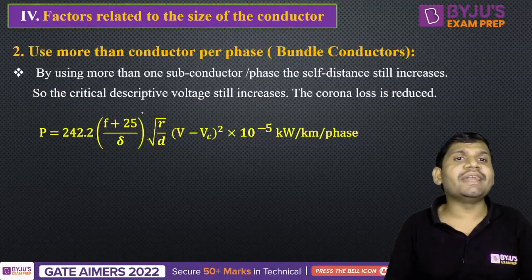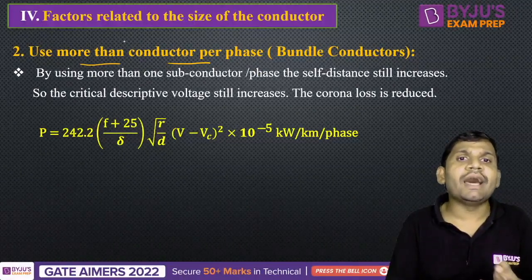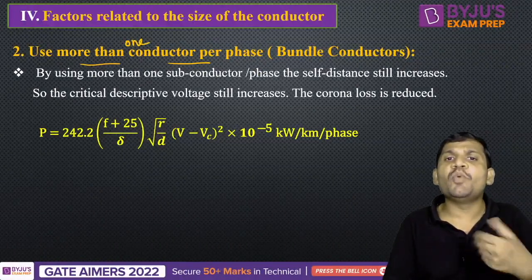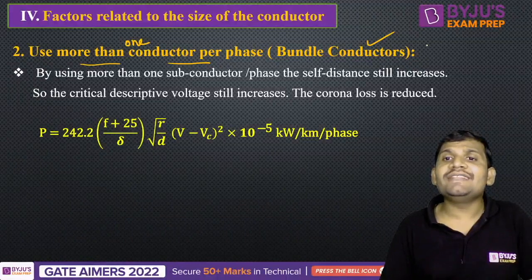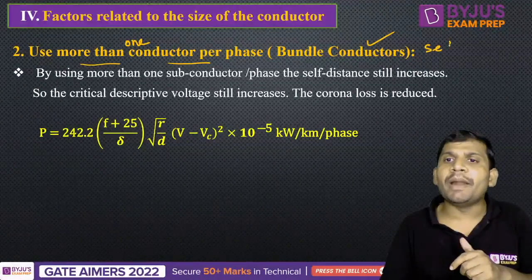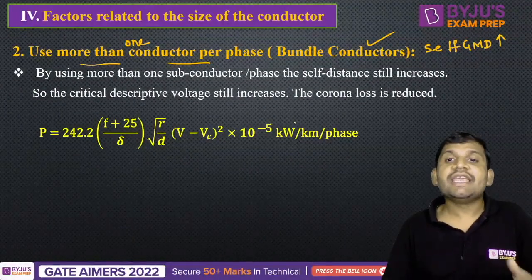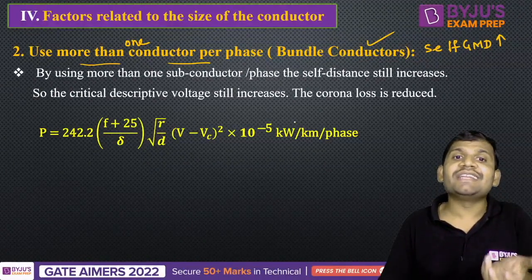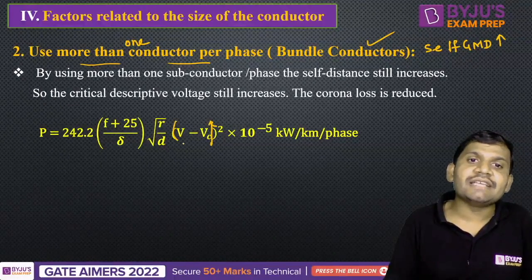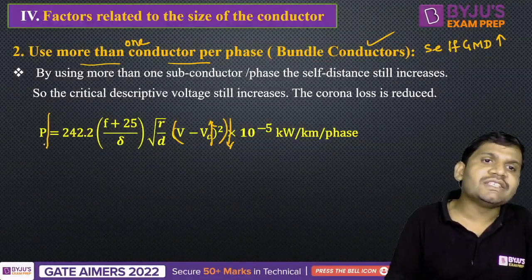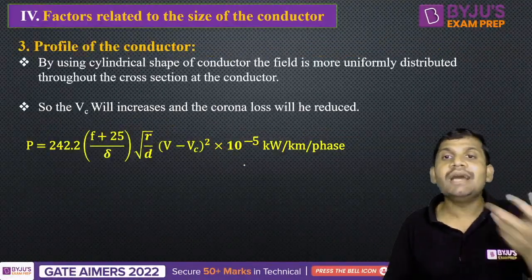One more factor related to size: use more than one conductor per phase, that is called bundle conductors. By using bundle conductors, the self-GMD (GMR) increases. If the GMR increases, then the critical disruptive voltage increases. When Vc increases, V minus Vc reduces, then power loss reduces. That is the reason why by using bundle conductors, we can reduce the corona loss.